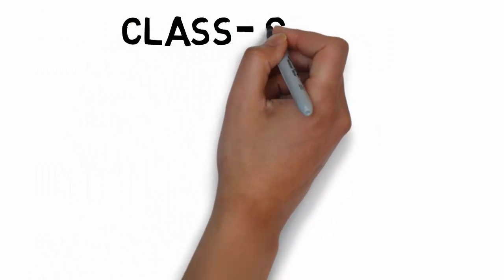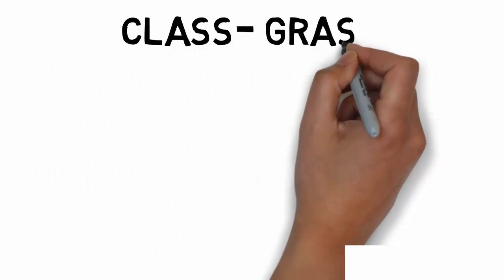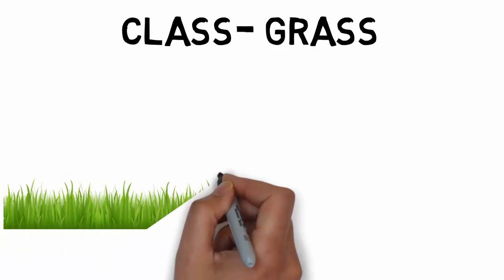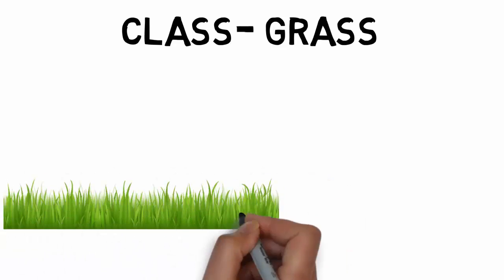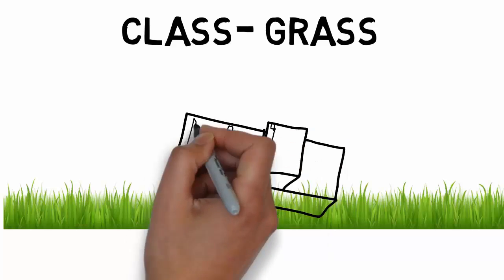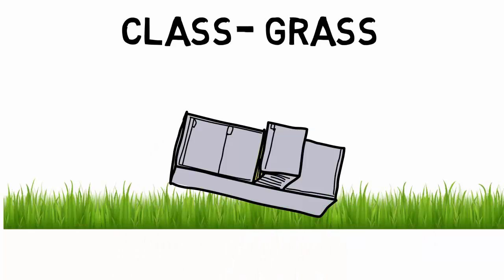The next level is class. The image you could use is grass, which is really easy because it rhymes with it. So maybe this file cabinet is so happy because it's filled with a whole bunch of crowns, it starts to roll in this freshly cut grass and roll around like a dog.